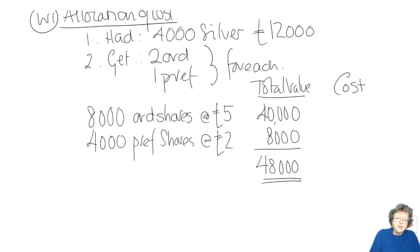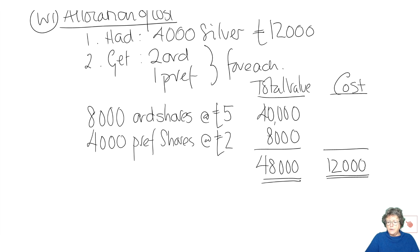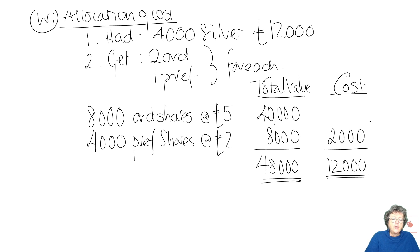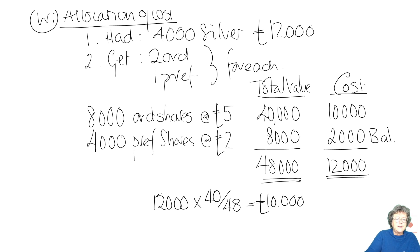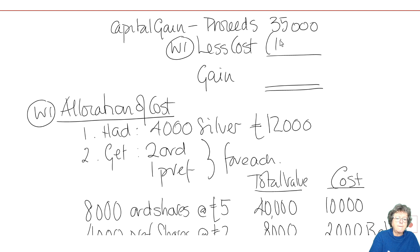Now the cost — this is the allocation of the cost section. The total cost of those ordinary and preference Gold shares is £12,000, and we then allocate that between these two shares by pro-rata from the 40 and the 8. That gives us £2,000 cost against the preference shares and £10,000 cost against the ordinary shares. We get that by: £12,000 × (40 ÷ 48) = £10,000, and £2,000 is the balancing figure. That £10,000 goes into the computation, giving us a gain of £25,000.